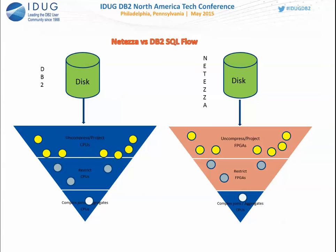How does SQL flow in a Netezza system? To process an SQL statement, data must be uncompressed, projected (selecting only needed columns from a table), restricted (applying WHERE predicates), and then aggregated with complex joins. In a DB2 system, data is fetched from disk, moved to memory, and all this work is done by CPUs. The architecture moves data from disk into memory for CPU processing.